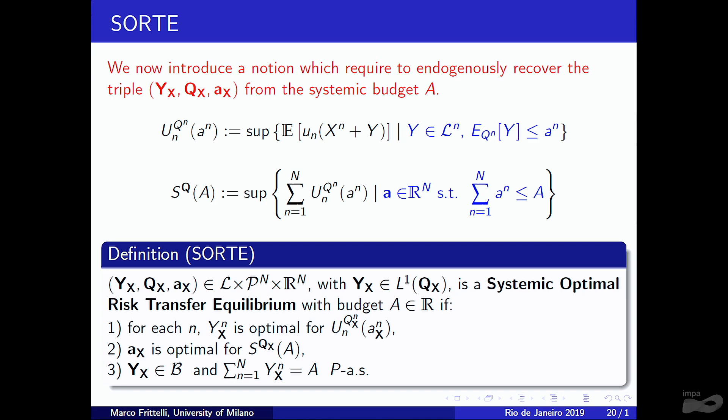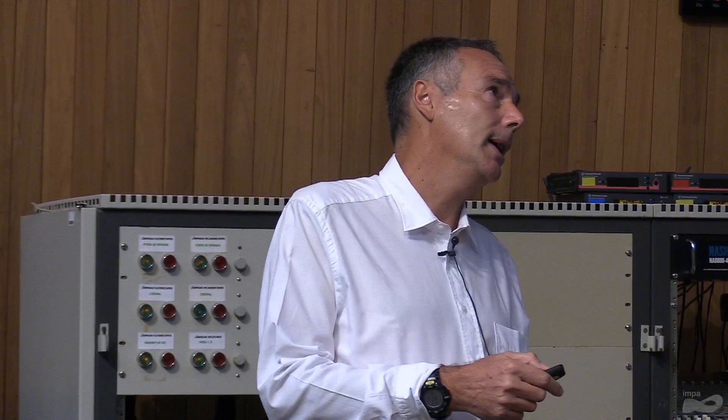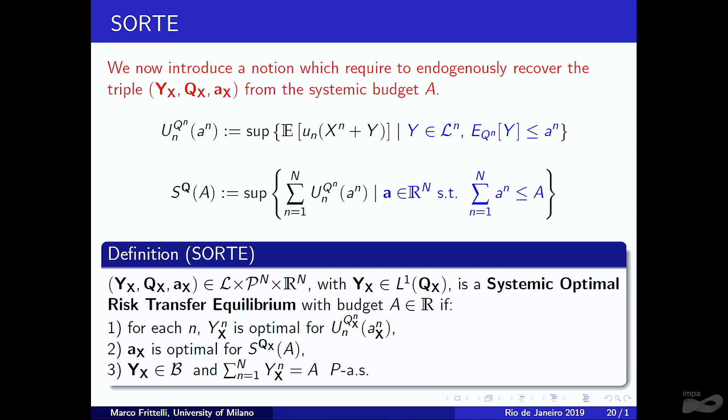Under some assumptions, there will be only one unique pricing measure, as in Bühlmann, but imposing the constraint Y ∈ B forces different pricing measures in general. If no restriction is imposed on B, a single pricing measure results. More generally, one can start with any cash-additive monotone pricing functional depending on n and find the solution is linear.